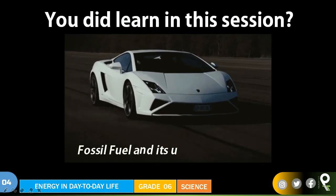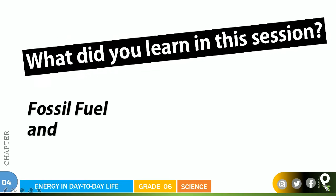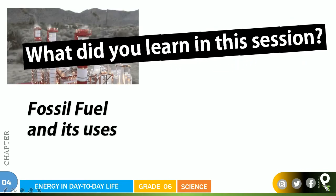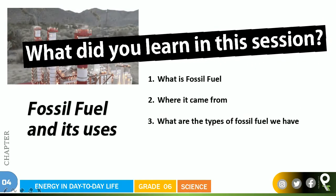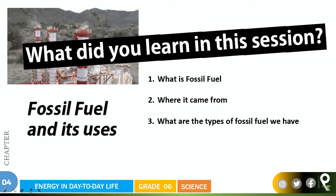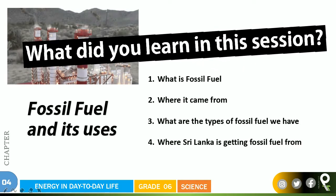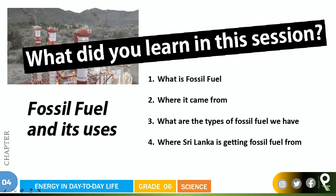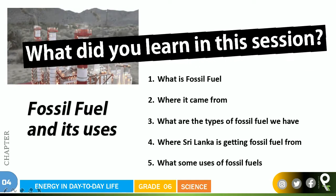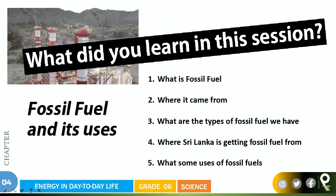You learned in this session fossil fuel and its uses very deeply. What did you learn? Fossil fuel and its uses — what is fossil fuel, where it came from, and what are the types of fossil fuel. It came from buried plants and animals but it took a long, long time — millions of years. Where Sri Lanka is getting fossil fuel from: United Arab Emirates, India, Singapore, China, and Oman. And finally, the uses of fossil fuel — it is used in vehicles, in gas stoves and burners, and in generators.